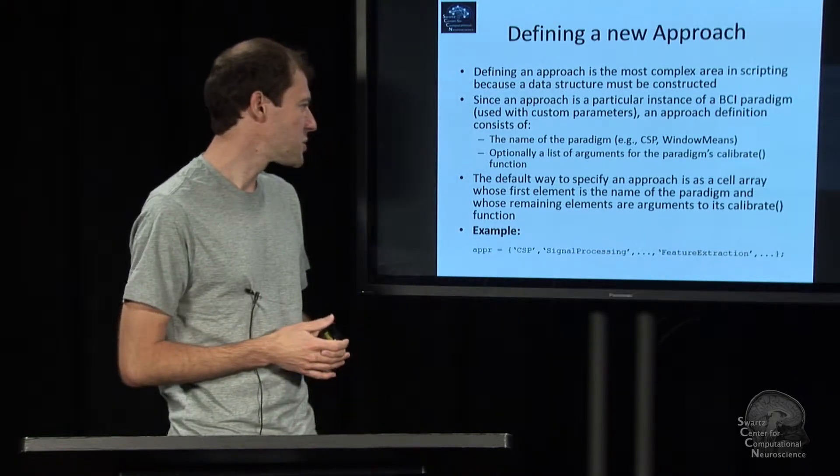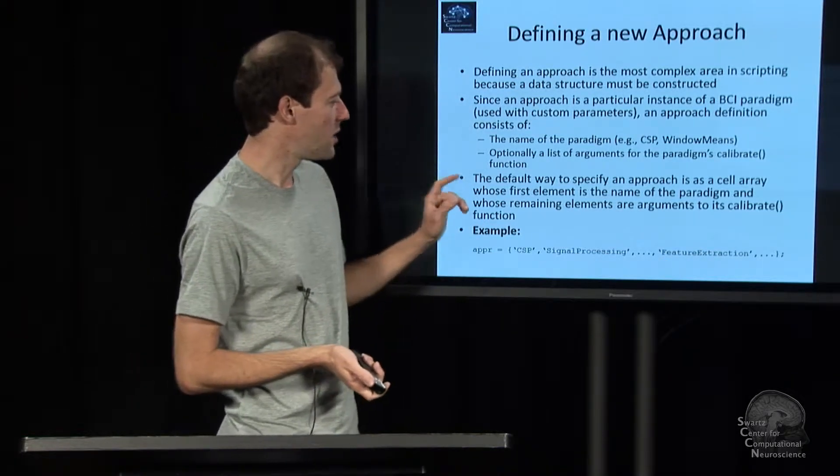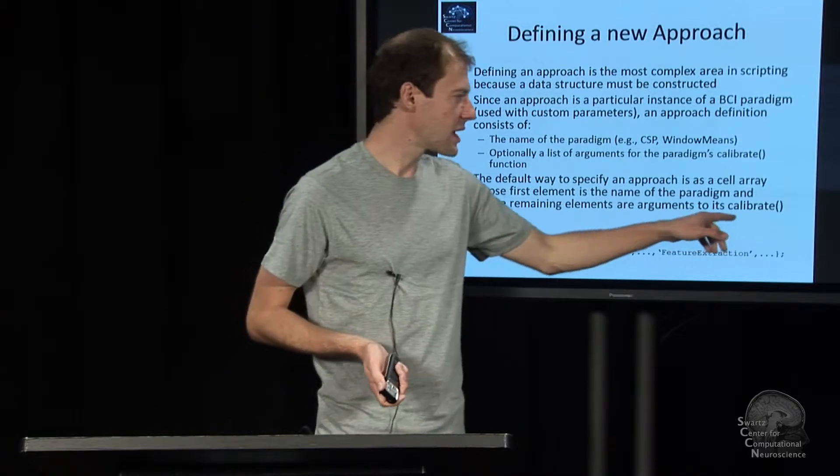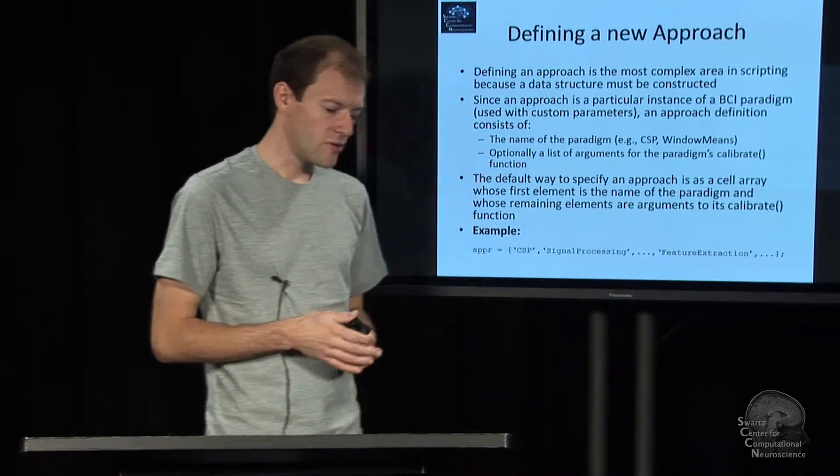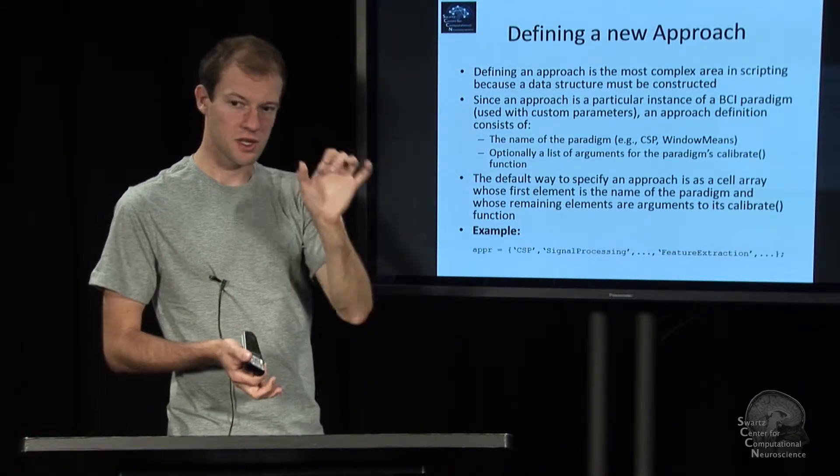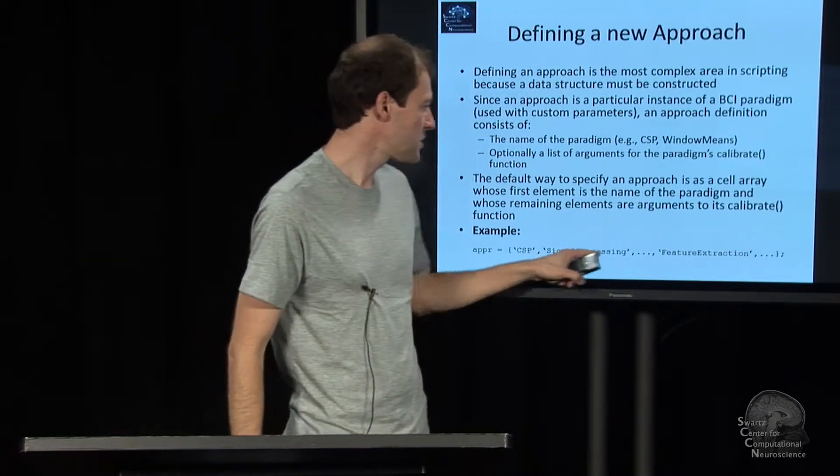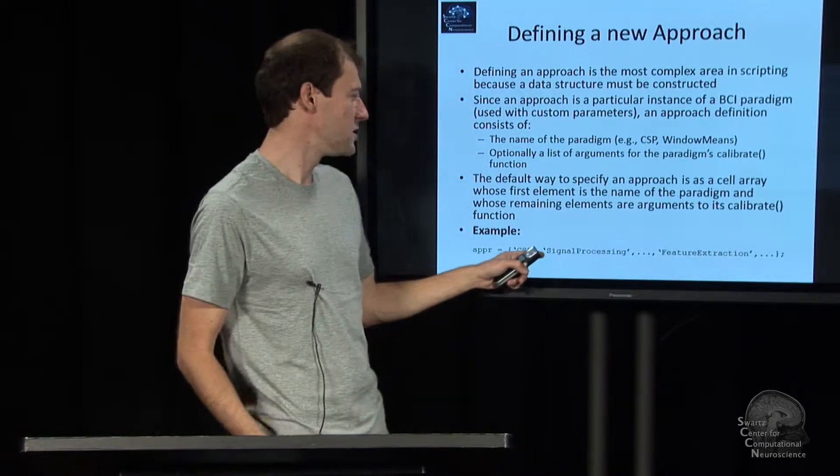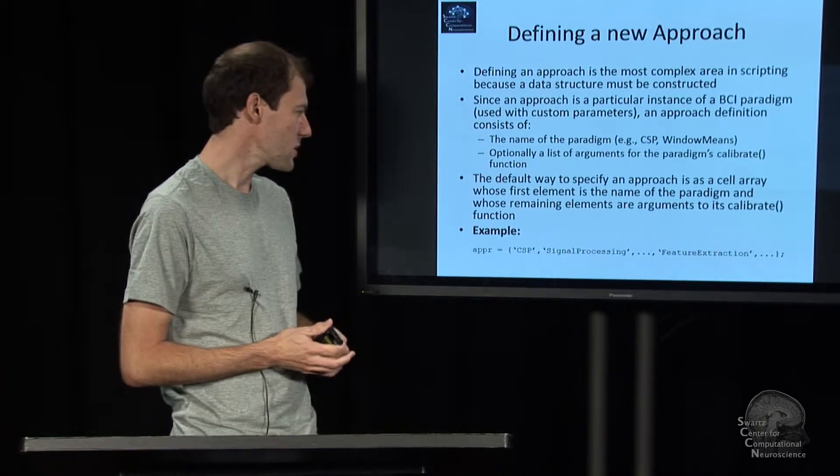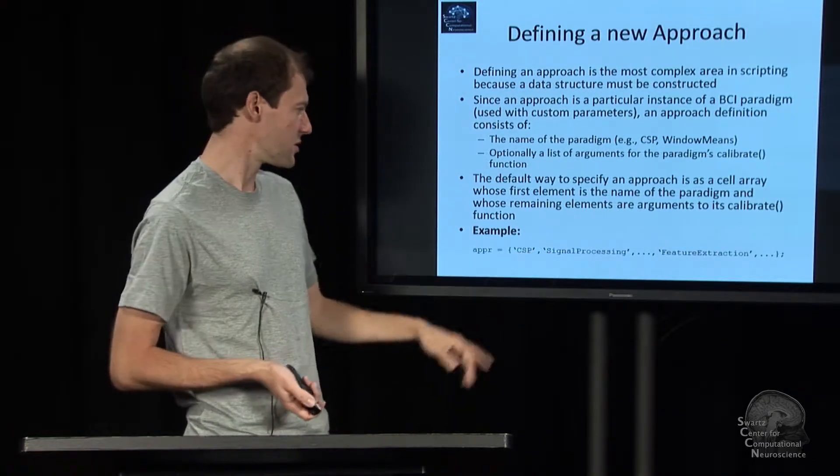Specifically the parameters are the parameters of the calibrate function of your paradigm. The paradigm is a class, it has a calibrate function and that function has some arguments, and these are the parameters that you may use here. The approach is a cell array as you see, so you select the paradigm and pass in parameters, rather simple story.